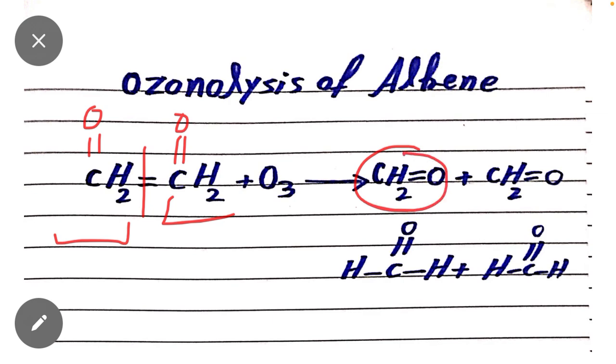After adding CH2=O, CH2=O, this product can also be written as HC=O-H. Similarly, HC=O-H. This is formaldehyde. It means when we do ozonolysis of ethene molecule, two molecules of formaldehyde are formed.